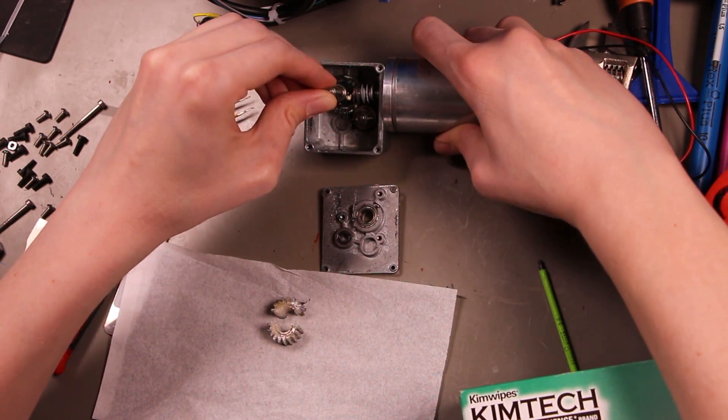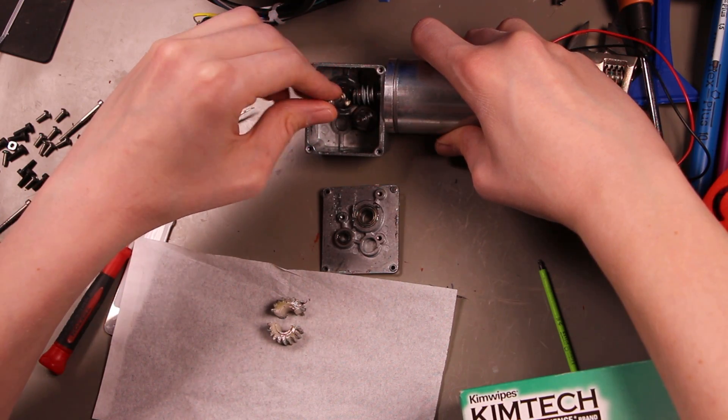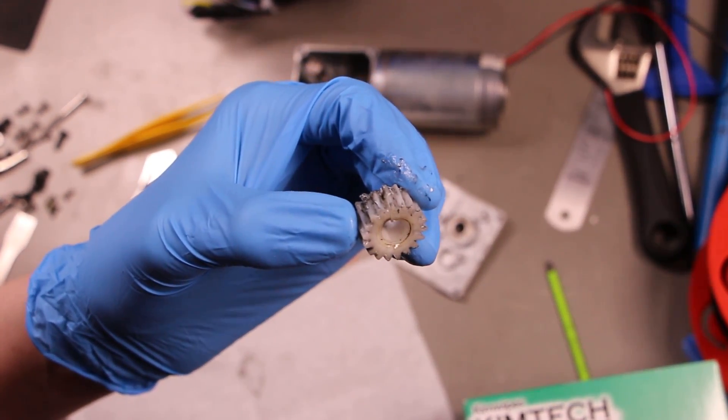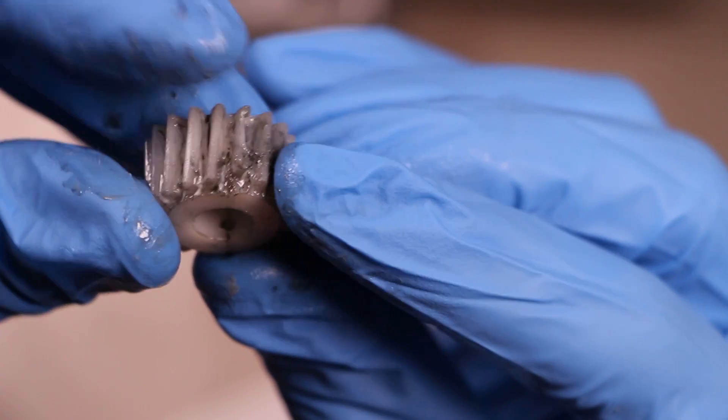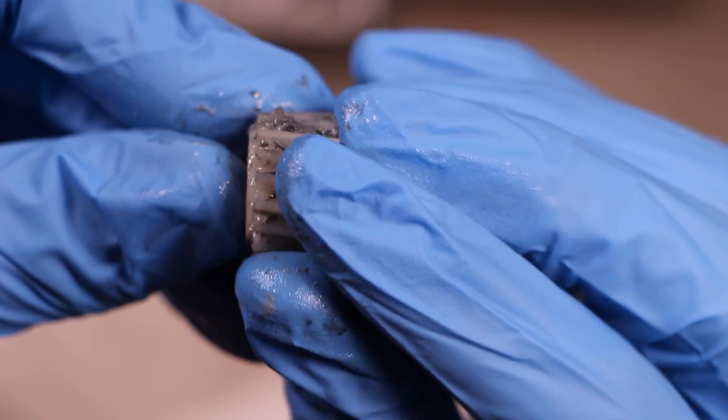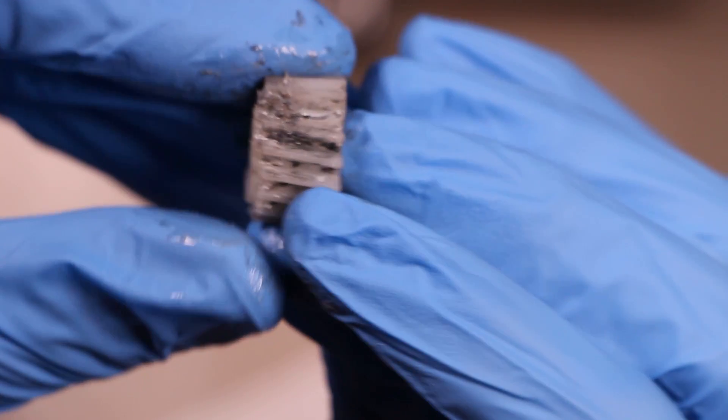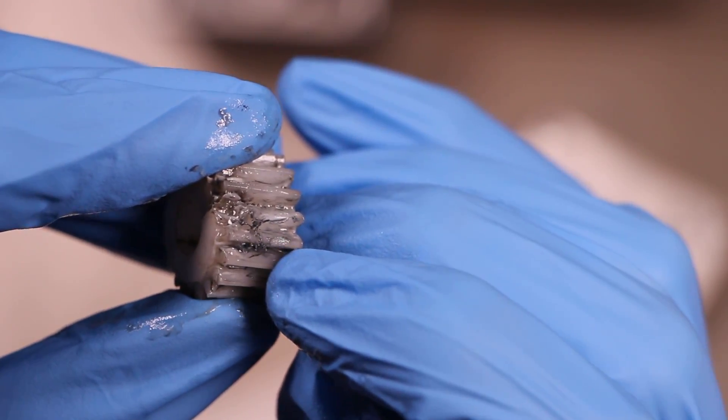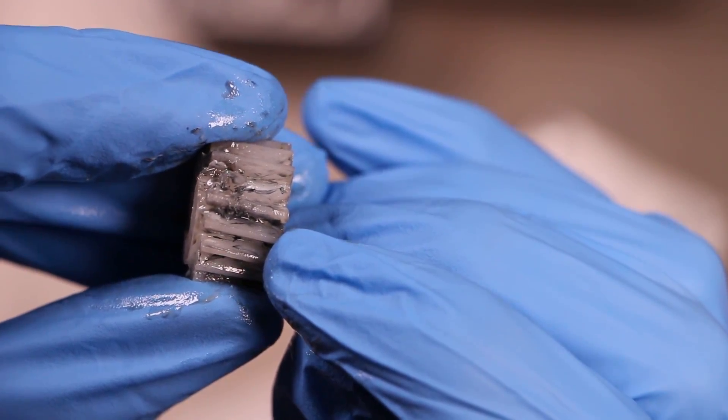But perhaps most incriminating of all, when I had this gearbox open earlier to inspect it after some of the previous issues, I re-lubricated it using some lithium grease that might not be compatible with the one nylon gear in the assembly. So this gearbox had multiple reasons to fail, but I think the actual failure here is something that still surprised me.